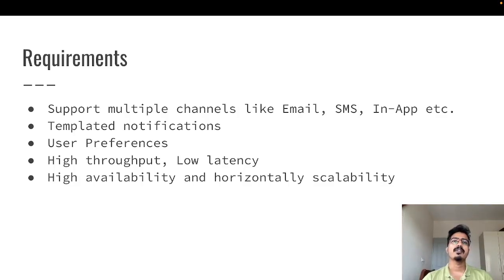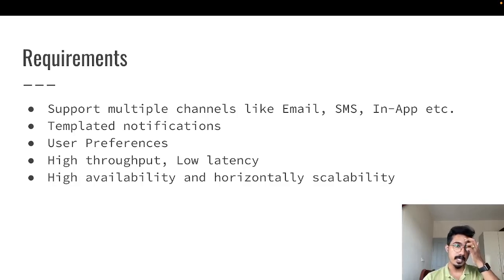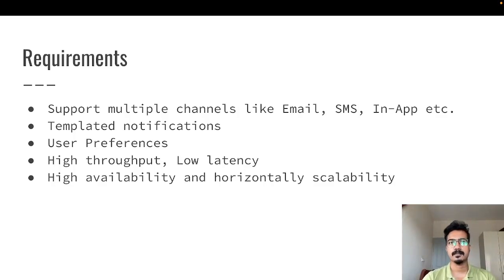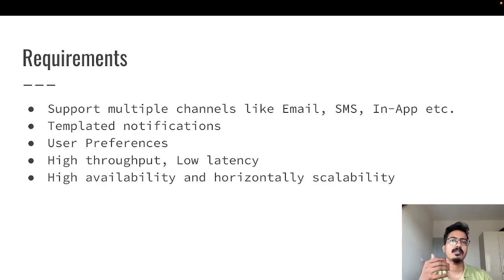The second non-functional requirement is high availability and horizontal scalability. As your application grows and you process more notifications, you should design the system so you can easily scale by adding more resources. Whether you're using AWS, Azure, or another cloud platform, your system should be designed for easy scaling in a distributed cloud environment. High availability means your system should always be available regardless of network issues or data center problems — for example, by replicating instances across multiple availability zones within your AWS region.